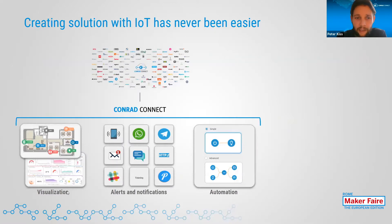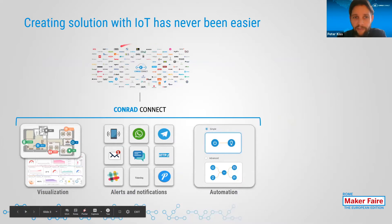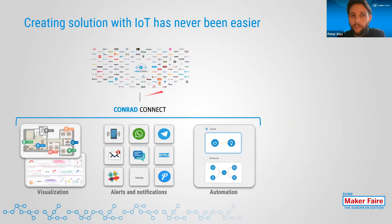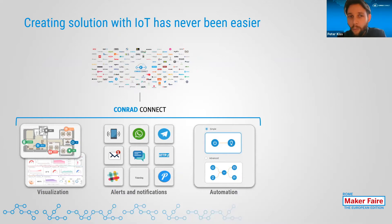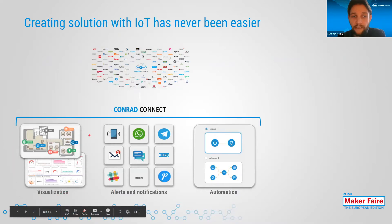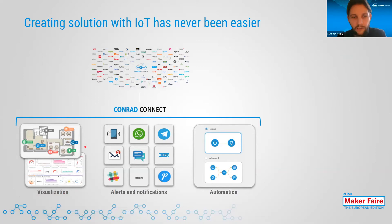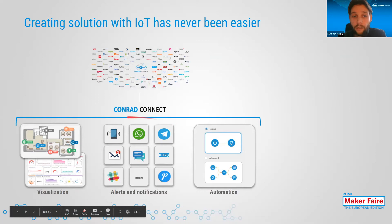So what exactly does the platform do? First, you need to connect different devices and solutions from the ecosystem we support. We are already supporting more than 120 top IoT brands covering more than 10,000 compatible devices, so there is a very good chance that all the devices you use at home or in your office are already supported. In the web application, you can use these devices with our data visualization functionality — you can build different dashboards to see all the data coming from your different devices and systems. You can also set up alerts and notifications.